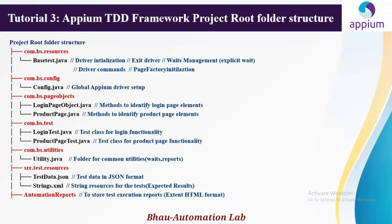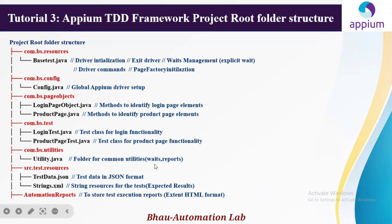Also in the root folder, we have an automation reports folder where we store all execution reports — ExtendReports and HTML reports. We use the ExtendReports library to create advanced, detailed reports based on execution results, rather than the basic text reports. Additionally, there is a screenshots folder where we store screenshots for all failed test cases, as well as recorded videos of test execution.